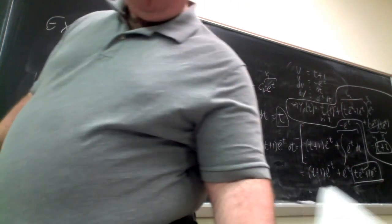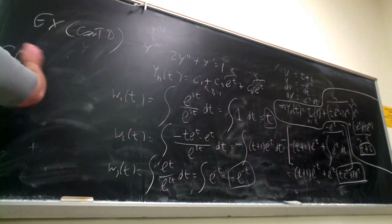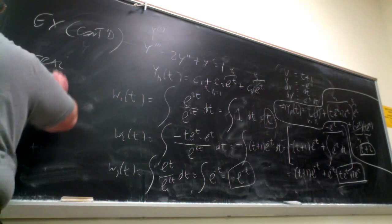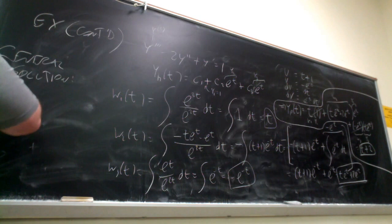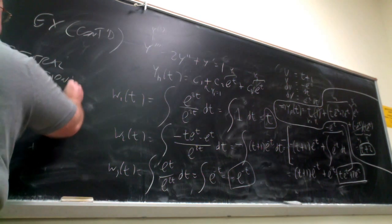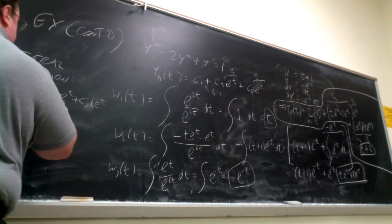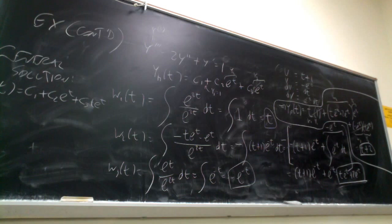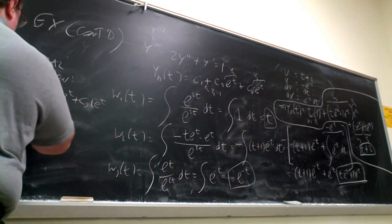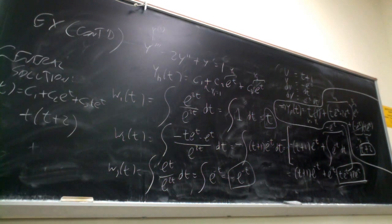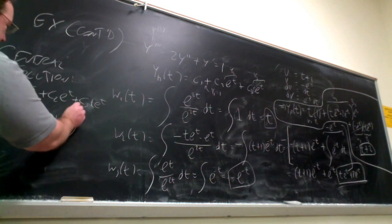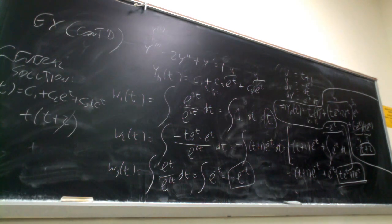So now you can write down your general solution. So you have c1 plus c2 e to the t plus c3 t e to the t. And what I can actually do is, and you might think, okay, you just go ahead and write down t plus 2 after that. And that's fine. There's nothing wrong with that. But I can actually drop that 2. Why? We have an arbitrary constant over there, so that would cover it. Okay. But again, either way, it's fine. Okay. So any questions about the, at least the finish of that process?